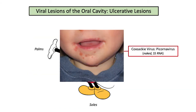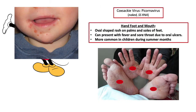If a patient presents with ulcers in and around the mouth along with oval-shaped vesicles on the palms of hands and soles of feet, think Coxsackievirus, a picornavirus. Coxsackievirus, also known as hand, foot, and mouth disease, is more common in children. It will often present with fever in addition to oral ulcerations and the classic hand and foot rash. This characteristic presentation makes for a fairly straightforward diagnosis.